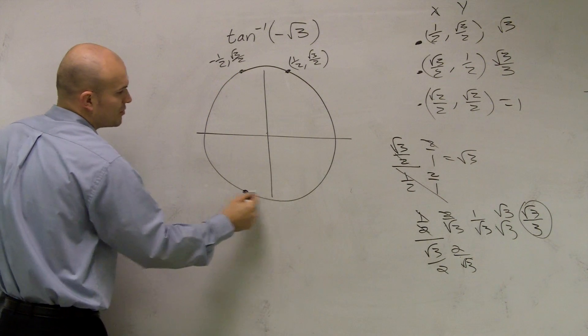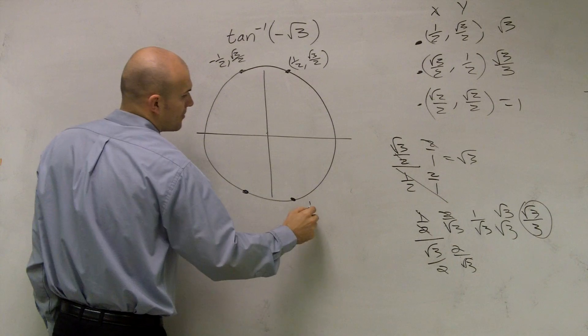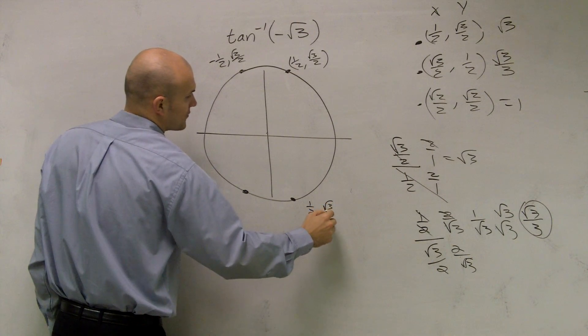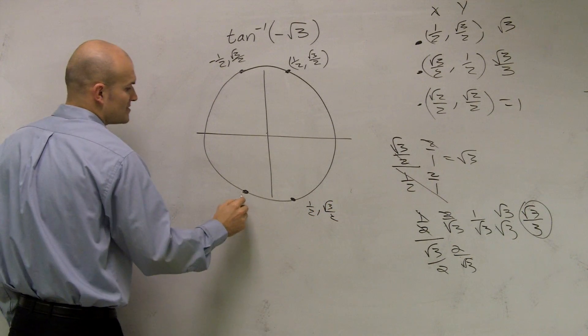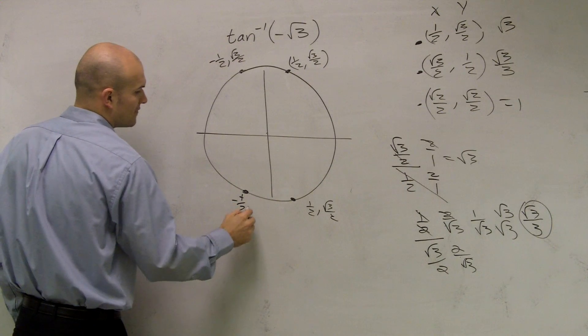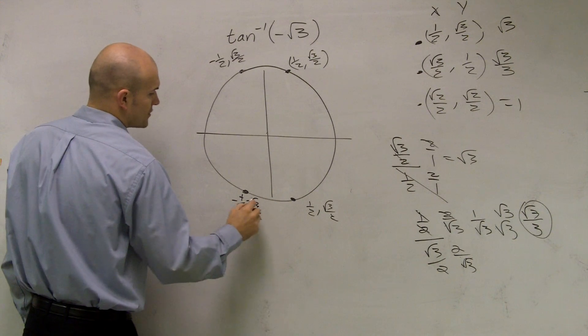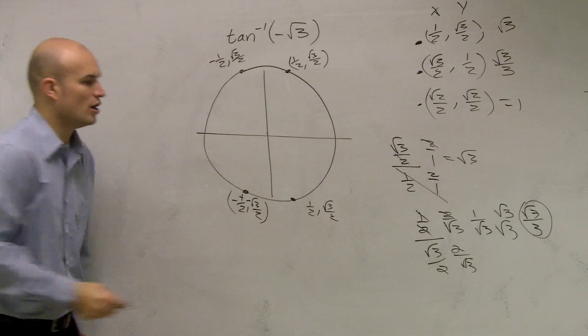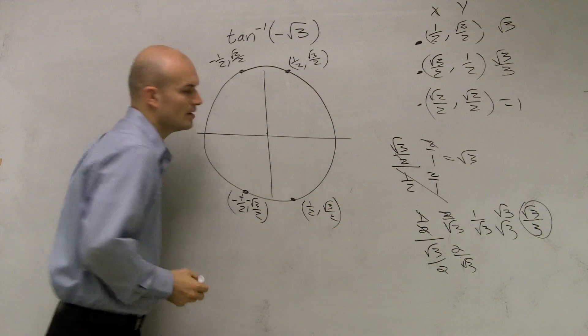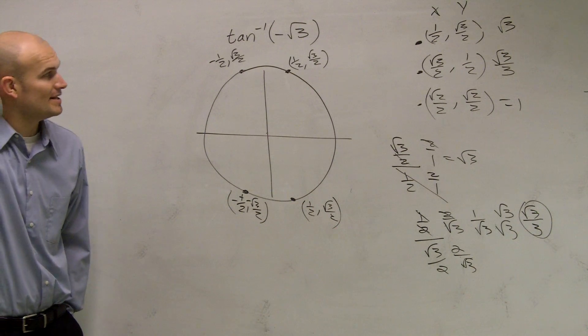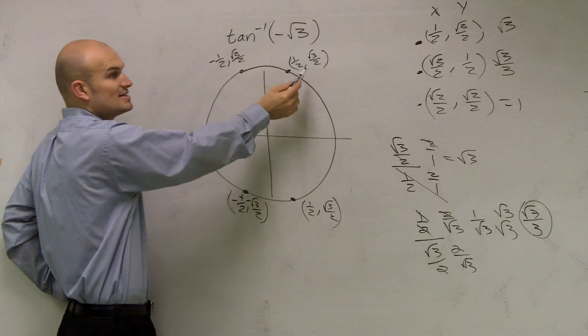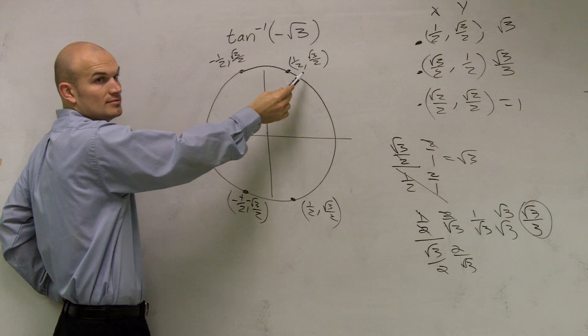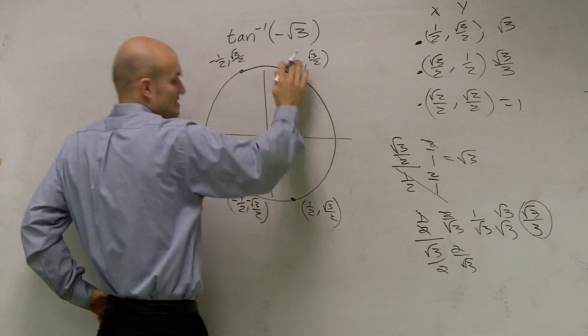Then we have our two points down here, which is positive 1 half, radical 3 over 2. And then we have this point down here, negative 1 half, radical 3 over 2. So all of these, actually not all of them are going to be negative. Because if you look at this, this is never going to produce a negative portion. So this angle doesn't work.